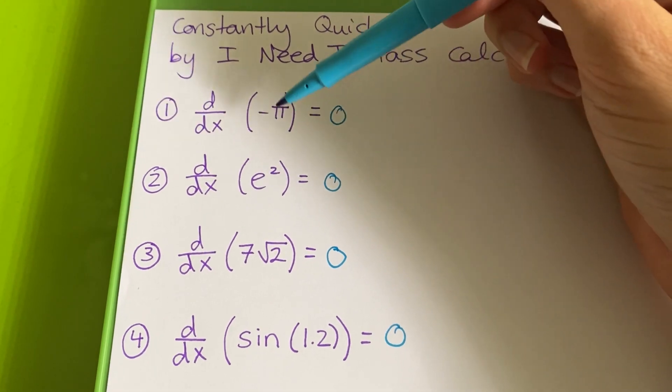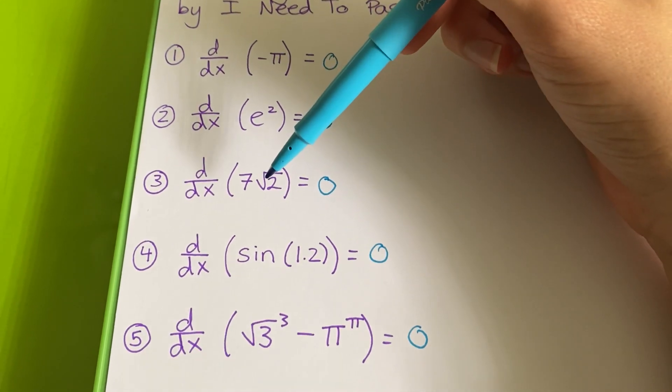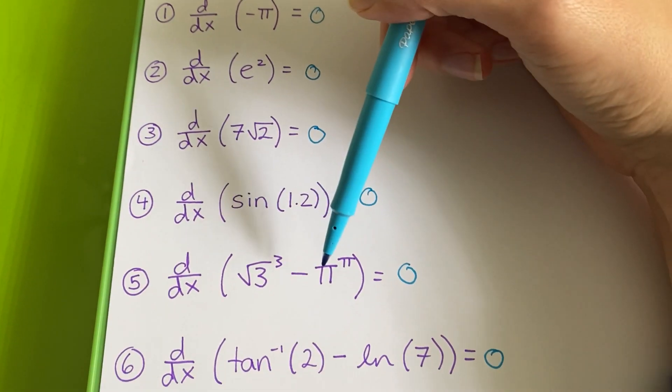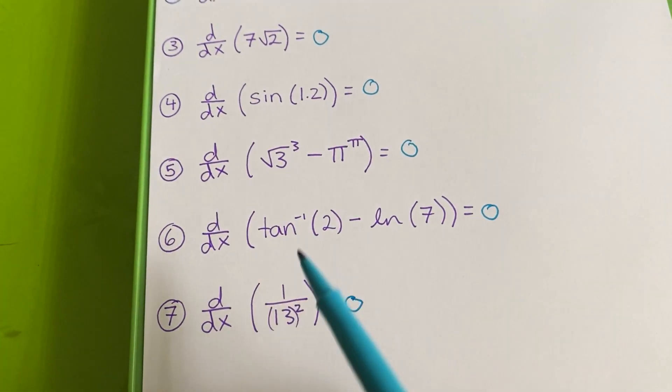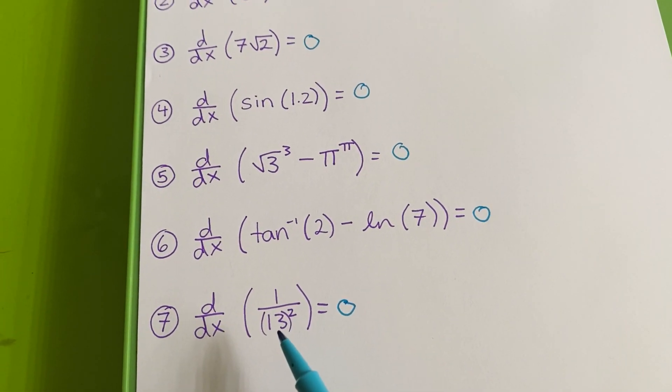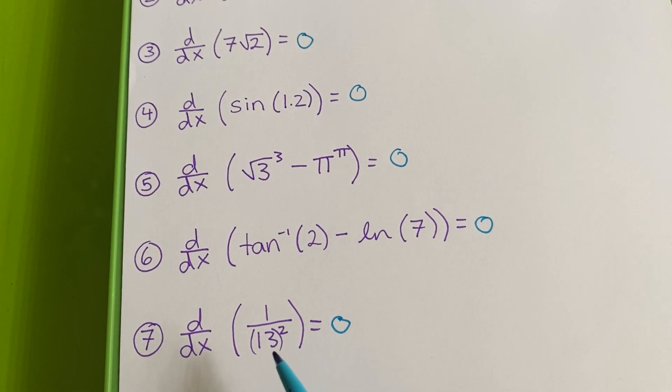And if none of these functions or expressions that we're differentiating have an x in them, and they're just defined constants, then the derivative of any constant is just zero.